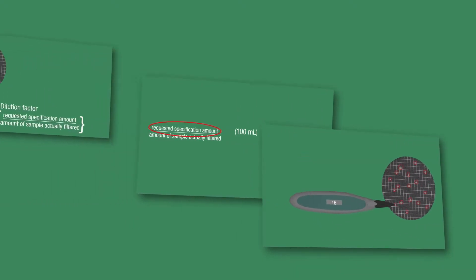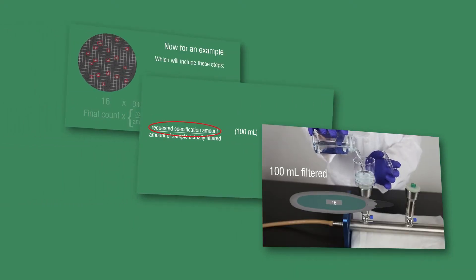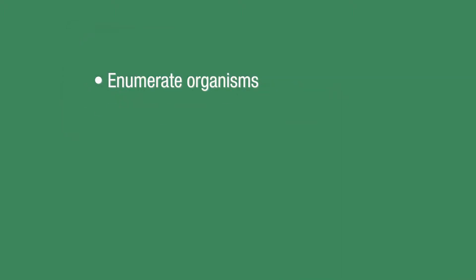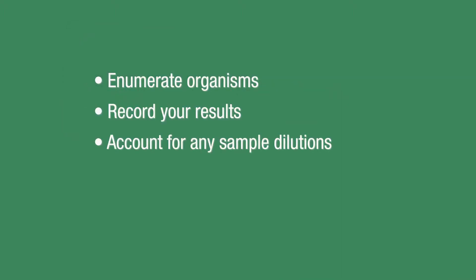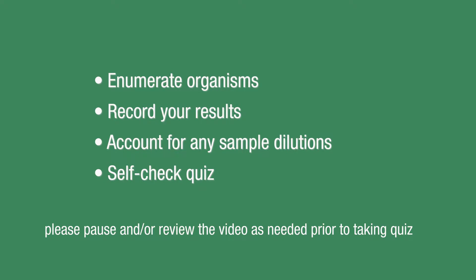The following video demonstrates how to accurately count and report results obtained using Neogen's filter and ampoule system. By the end of this presentation, you will be able to enumerate organisms, record your results, and account for any sample dilutions. A short self-check quiz follows the presentation, and we encourage you to pause and review the video as needed prior to taking the quiz.